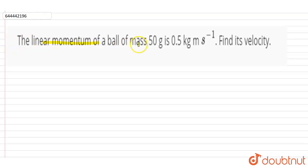Hi, in this question, the linear momentum of a ball of mass 50 gram is 0.5 kg meter per second. Find its velocity. So here in this question, linear momentum is given, mass of the ball is given as 50 gram. To convert it into kg, this is equal to 50 into 10 to the power minus 3 kg.